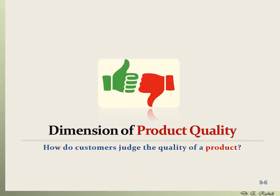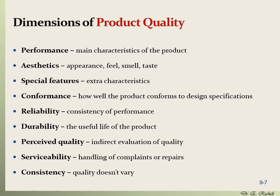Let's start with quality of products. What are the dimensions for product quality, or how do you as a customer judge the quality of a product? What are the important characteristics of a product that you would call it high quality? There are certain characteristics or criteria for a product for customers to call it a high quality product — these are called the dimensions of product quality. One of them is performance: you want a high quality product to have high performance, to perform well and in an expected manner.